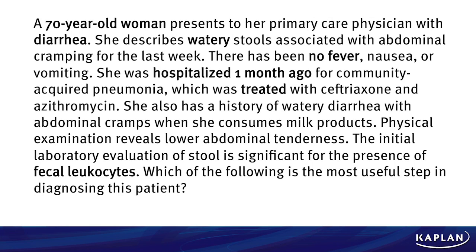So this patient — we've got a 70-year-old woman who presents to her PCP, which is you. What does she present with? Diarrhea. How she describes the diarrhea should stand out to you. Is it watery? Is it bloody? She describes it as watery, associated with some abdominal cramping for one week. There's been no fever — that should be really big — no nausea or vomiting. She was hospitalized one month ago, and that should jump out to you. Any time we have a recent hospitalization, you've got to think: is it something that happened in the hospital that's causing this? Why was she there? For CAP — community-acquired pneumonia. She was treated with cephalosporin and azithromycin, a typical regimen we would expect for CAP.